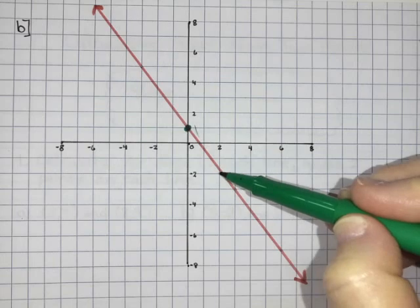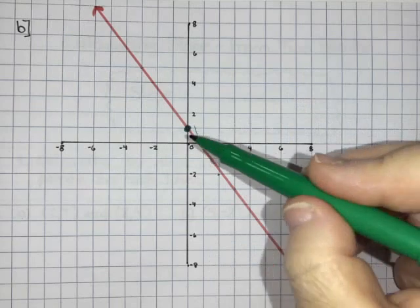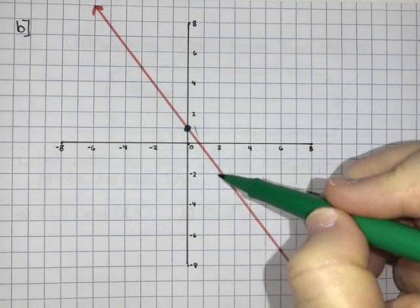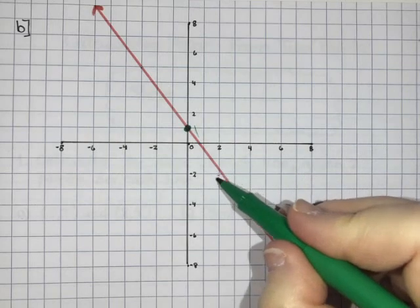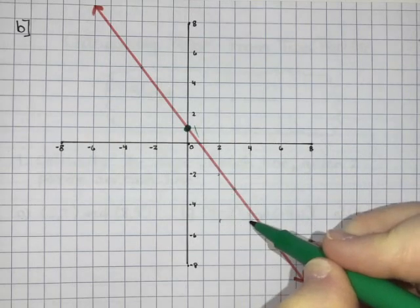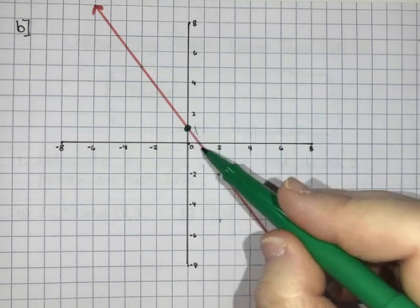Now it kind of looks like it might be here and if it was here that means I've gone down 1, 2, 3 and I've gone over 1, 2. So I should be able to go down 3 again and over another 2 and still be on my line which I'm not. So I'm pretty sure that point is a little bit off. So I'm going to keep going.